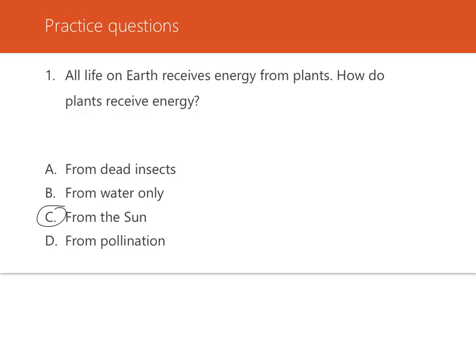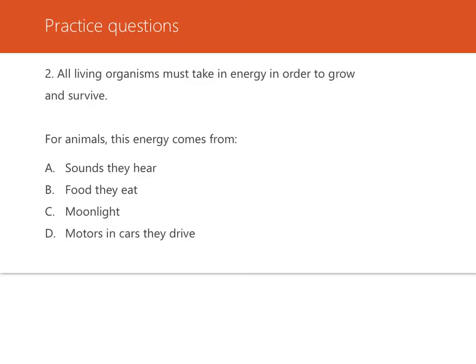All living organisms either eat plants or consume other organisms that eat plants, and in turn they receive some energy from the plants that originally came from the sun. Question two: all living organisms must take in energy in order to grow and survive — so for animals, this energy comes from what? Animals get the energy they need from the food they eat. Every living organism needs energy to perform even the basic processes of life, like growing, repairing, and reproducing.